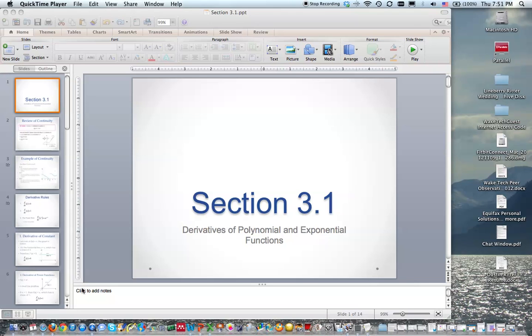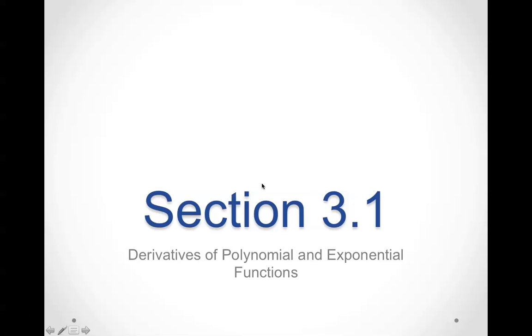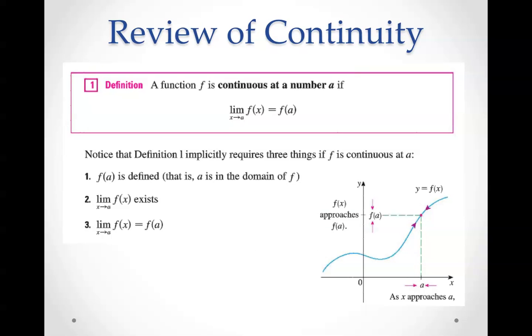This is section 3.1, Derivatives of Polynomial and Exponential Functions. Now, first I'm going to review continuity because it was something we didn't really do so well with on the test. The definition of a function f is continuous at a number a if the limit as x approaches a of f(x) equals f(a).